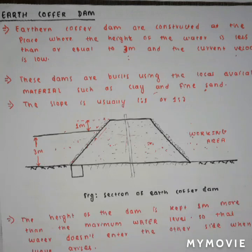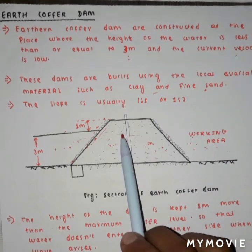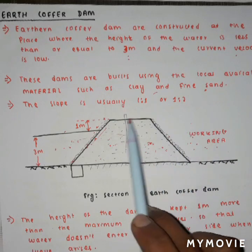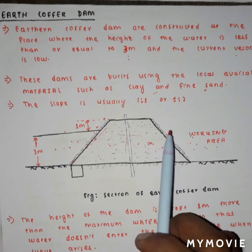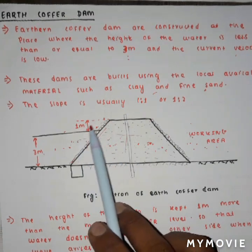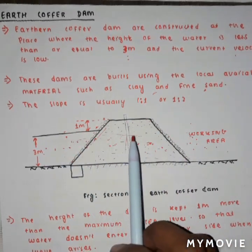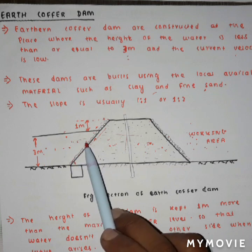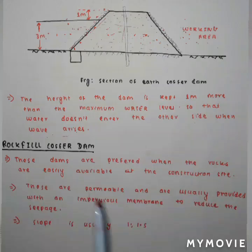In the earth cofferdam, locally available material such as clay and fine sand is used for construction, and a sheet pile is driven in the middle to prevent leakage of water from the water body to the working area. The slope of this type of earth cofferdam is generally kept 1:1 or 1:2. This type is generally preferred where the height of water is a maximum of three meters. A freeboard of generally one meter is kept to prevent flow from the water body when waves arise. This outer portion of the earth cofferdam is pitched with riprap stone to prevent scouring.